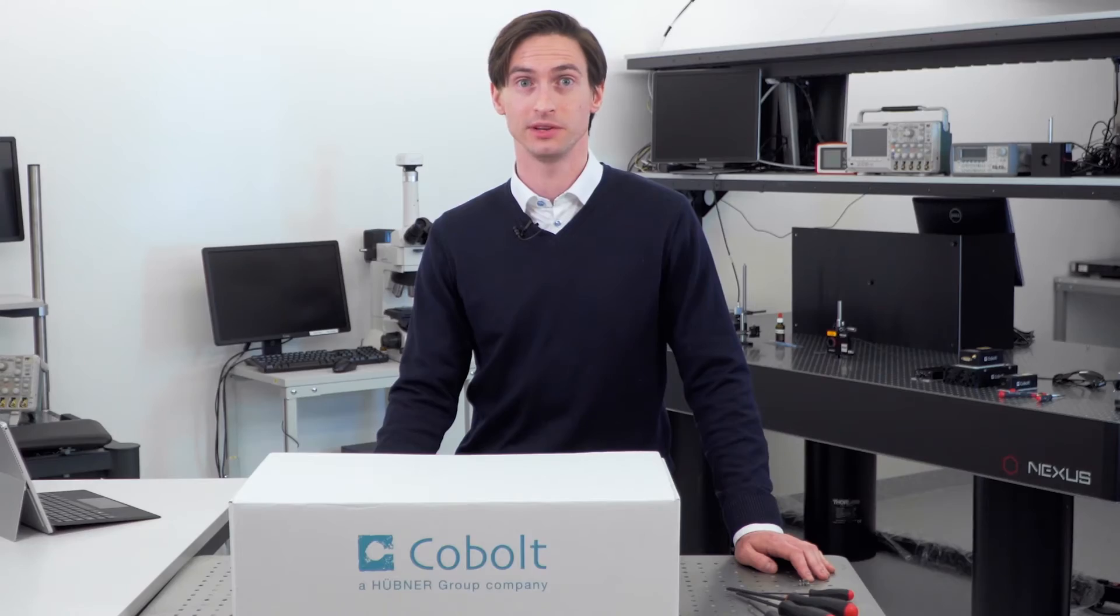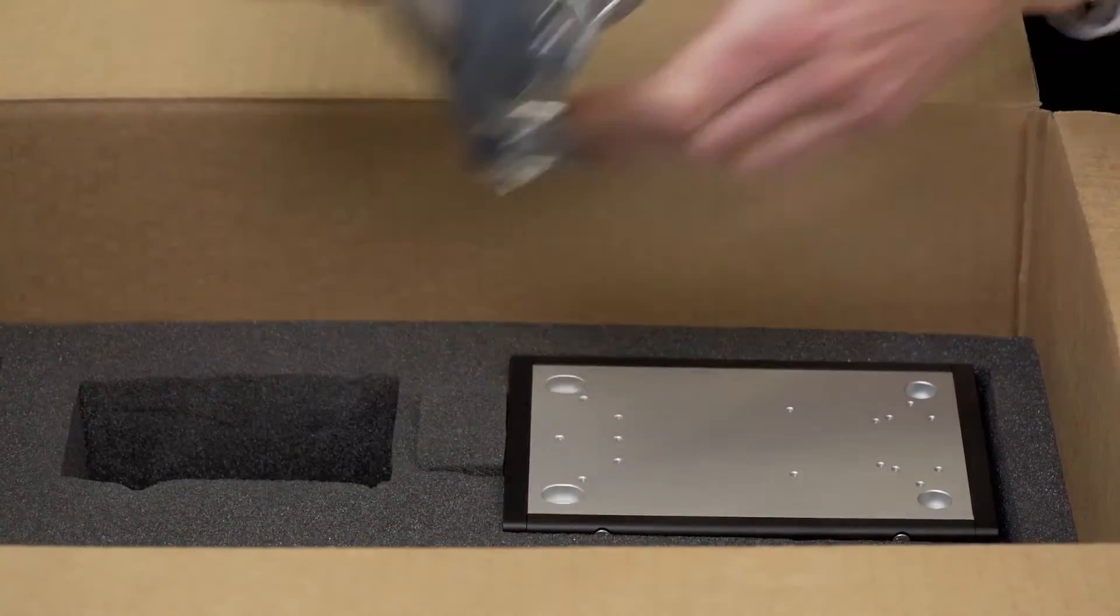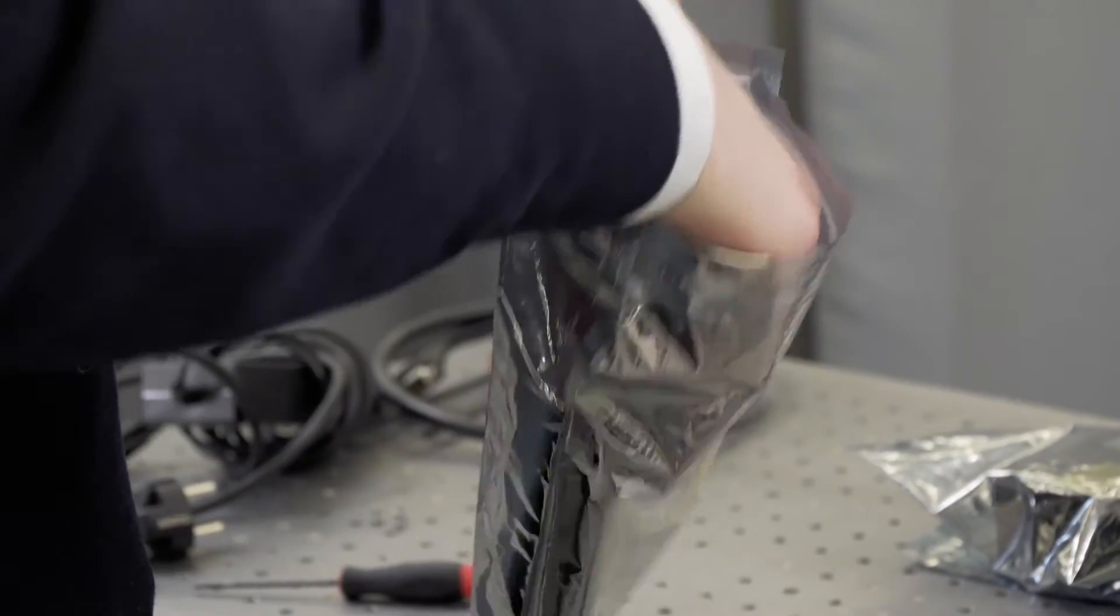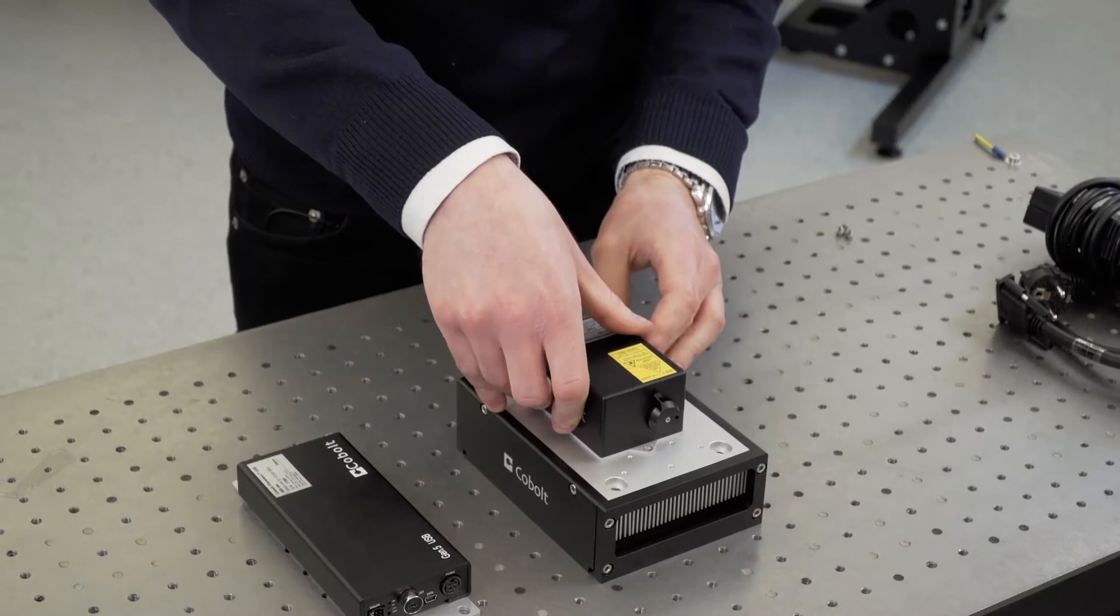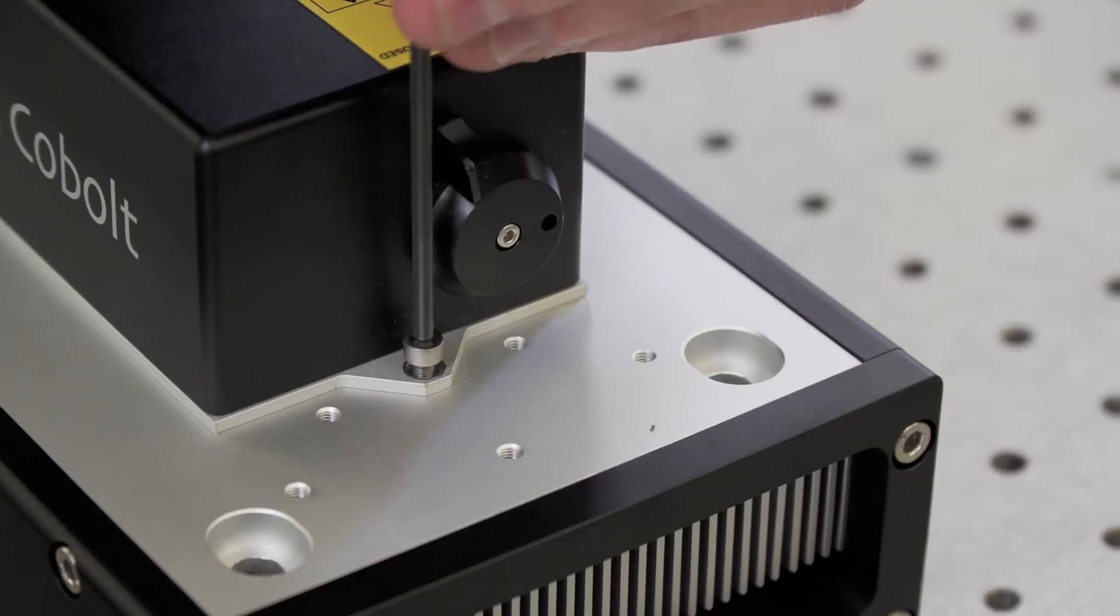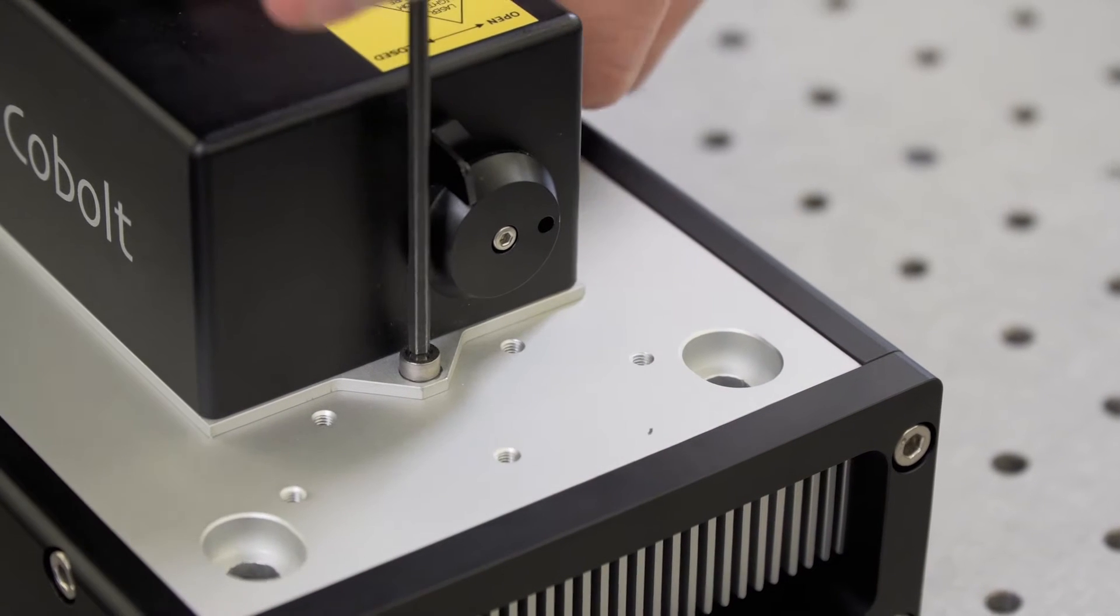If you have just bought a Cobalt laser, you'll need to take the laser head and the controller out of the ESG protective bag, assemble it and mount it onto the heatsink. It's important to have it mounted onto a heatsink to prevent overheating.